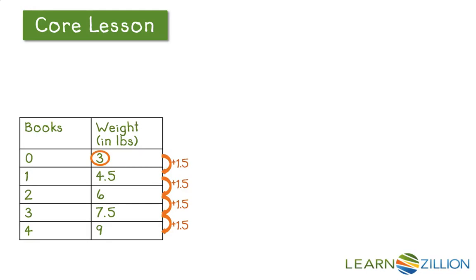Now I have this number here that's circled. That's a 3. That's the value of my weight when my books are 0.